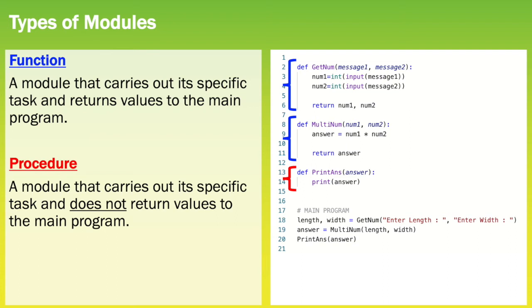A procedure carries out its specific task but does not return any values back to the main program. So in this case print_ants is a procedure because there is no return statement — therefore it is not returning any values to our main program.